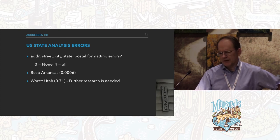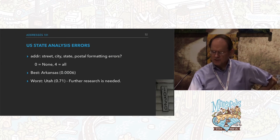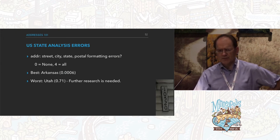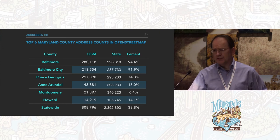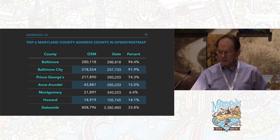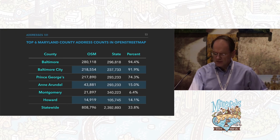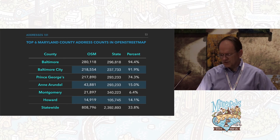I also looked at formatting errors — are the street, city, state, and postal formatted correctly if they're not null? Again, the best was Arkansas, and the worst was Utah, though I haven't really researched why. Turning to Maryland, where I'm from, we've done some imports on counties. Comparing OpenStreetMap to state government data, the imported counties are both in the 90s. Howard County, where I live, is at a lowly 14% overall, and the state of Maryland is just under 34% addresses covered.